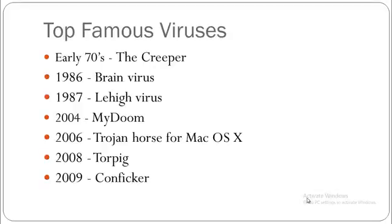The Jerusalem virus had bugs inside it that reinfected files that were already infected. After that we had the Robert Morris worm, the trojan horse for Mac OS X, Torpig, and Configure. The Robert Morris worm invaded ARPANET computers and disabled around 6,000 computers on the network by overflowing their memory banks with copies of itself.